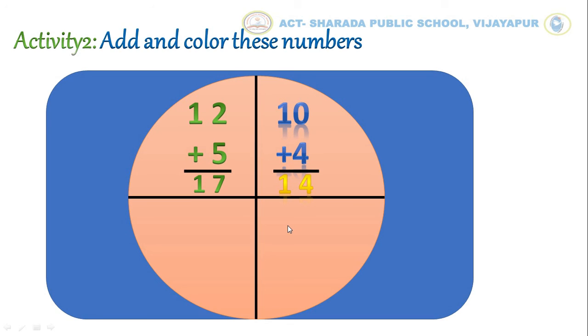If you get 17 as the answer, then color that part with green pencil. If you get 14 as the answer, then color that part with yellow pencil.